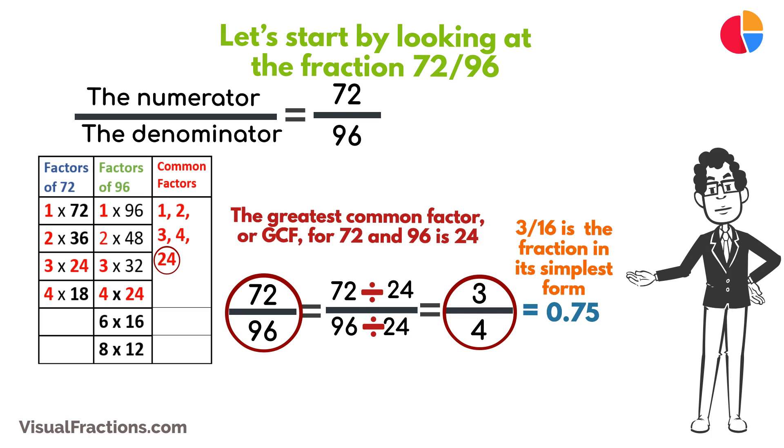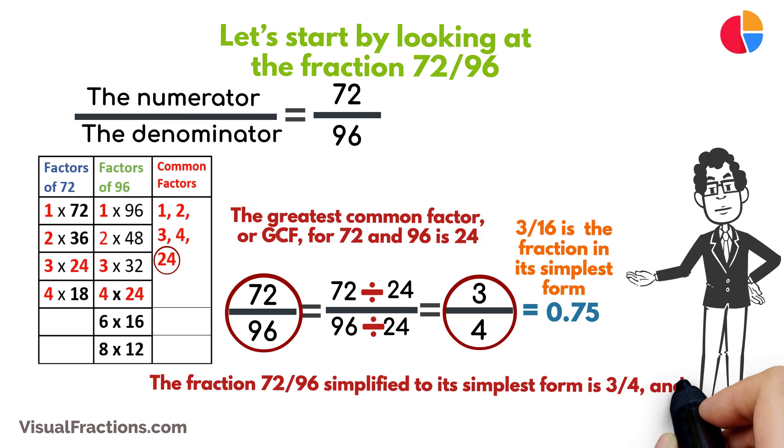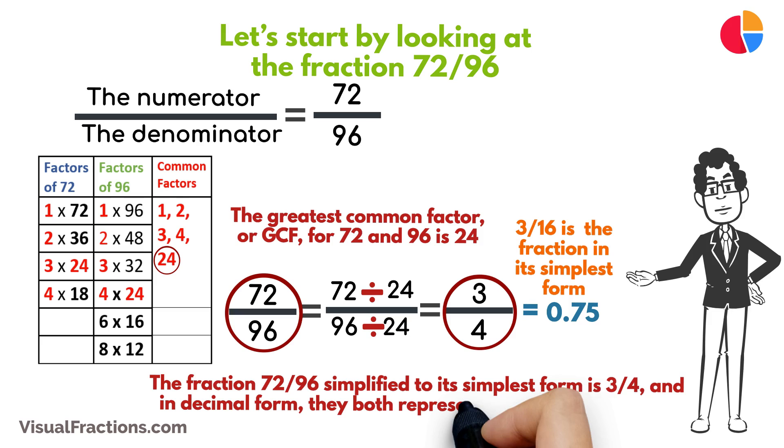So, there you have it. The fraction 72/96 simplified to its simplest form is 3 quarters, and in decimal form, they both represent the same value, 0.75.